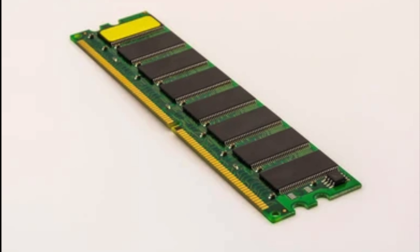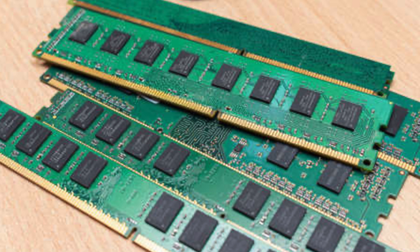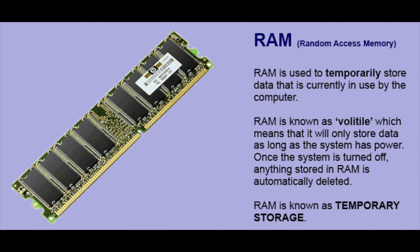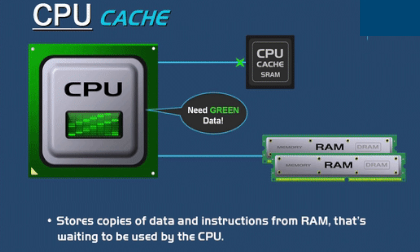Welcome and thank you for joining me on another episode of Computer Terms for Beginners. Today we will be going over the term RAM. RAM stands for Random Access Memory. This is different from ROM as it is user accessible and user interactive. RAM is known as volatile, which means that it will only store data as long as the system has power. Once the system is turned off, anything stored in RAM will automatically be deleted. This is also known as temporary storage.